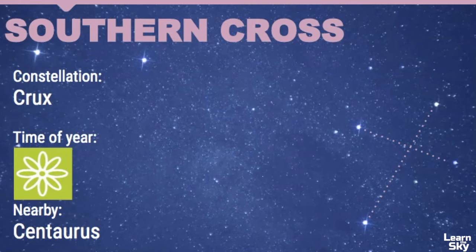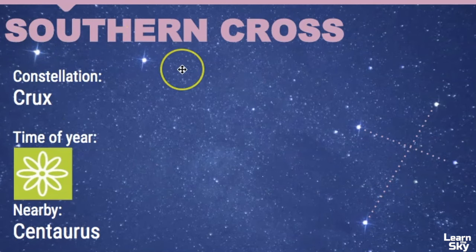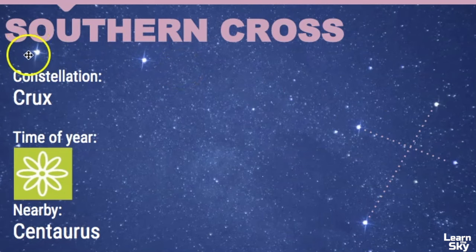I'm only ever going to teach what you can see from the northern hemisphere perspective. There are some nearby constellations — Centaurus is one of them. If you draw a straight line from the Southern Cross, you should notice these two bright stars which are part of the Centaurus constellation. This star right here is Alpha Centauri — that's a triple star system that also has Proxima Centauri as one of those stars.